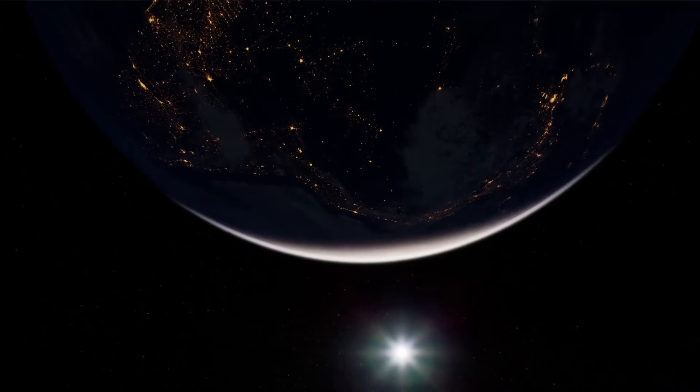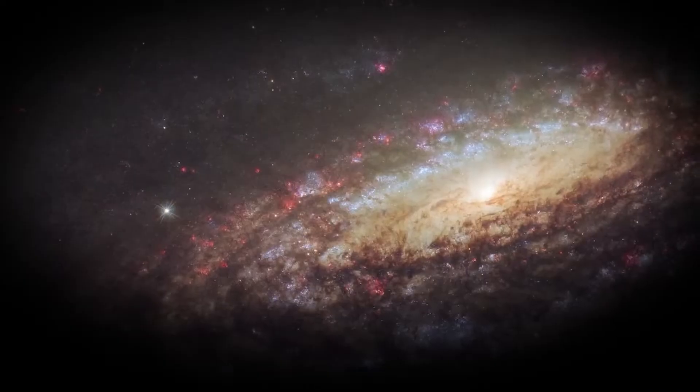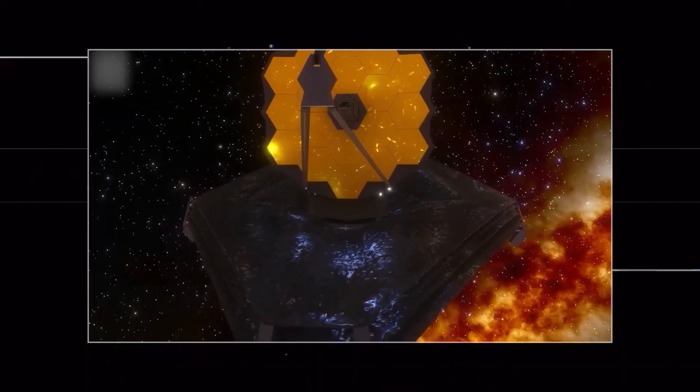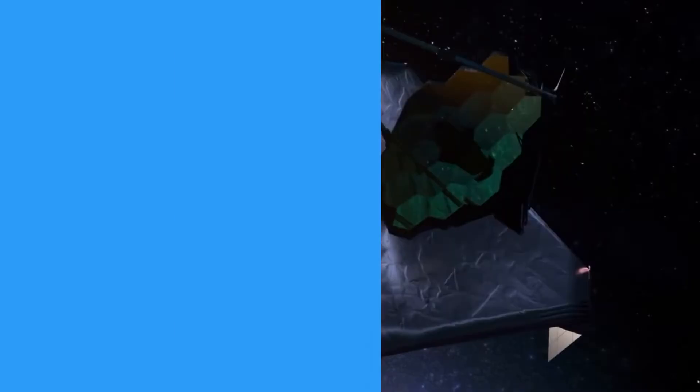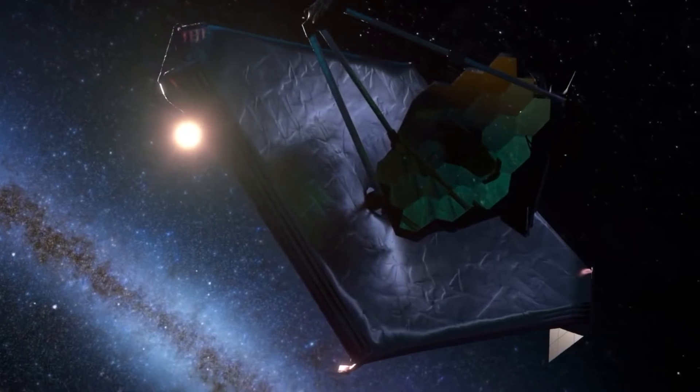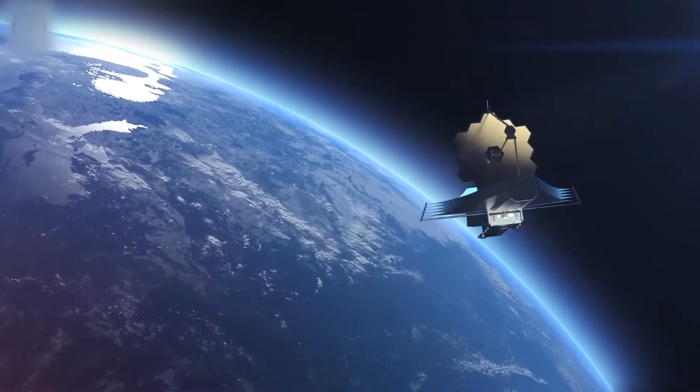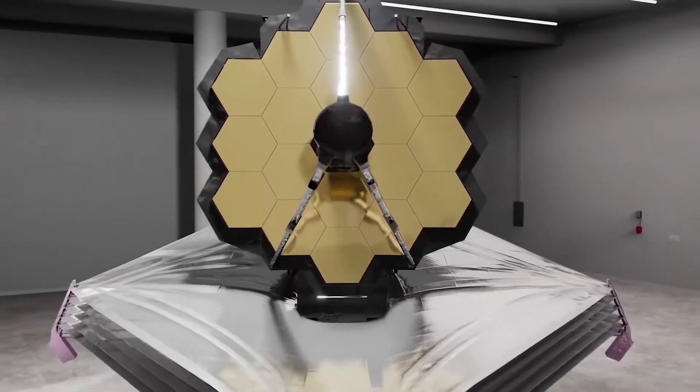The targeting flexibility of the JWST is less than that of the Hubble Space Telescope. Because the telescope must face away from the sun to keep its equipment cool, its field of sight will cover 40 percent of the sky on any day, and accessing the entire sky will take around six months.